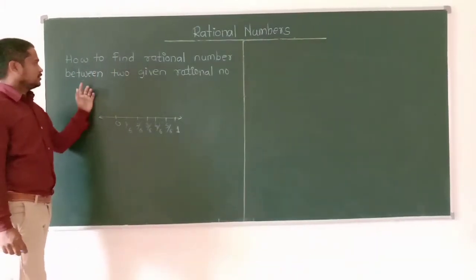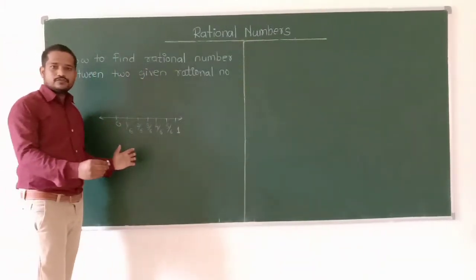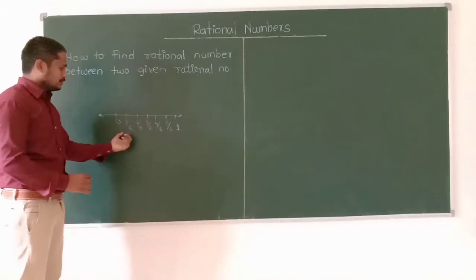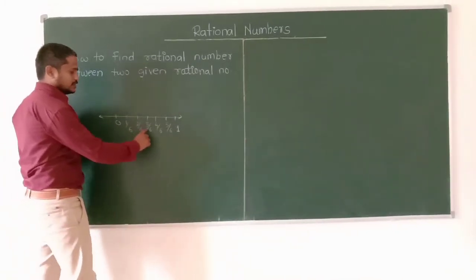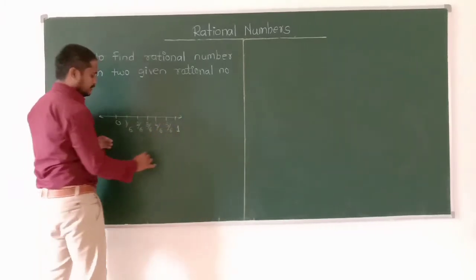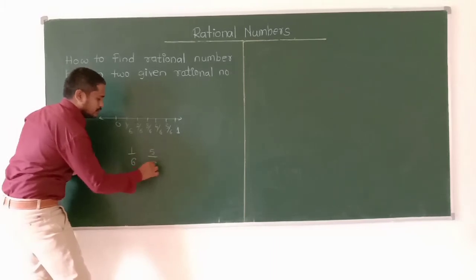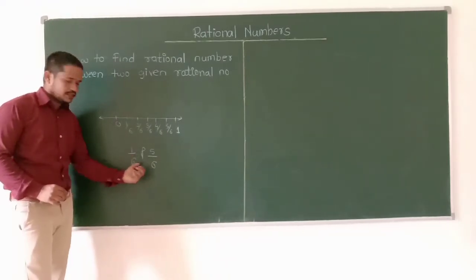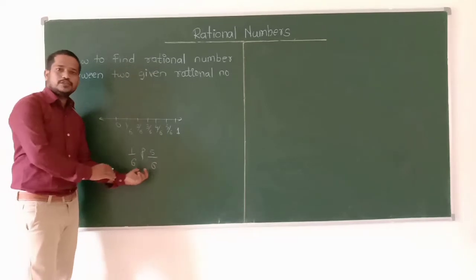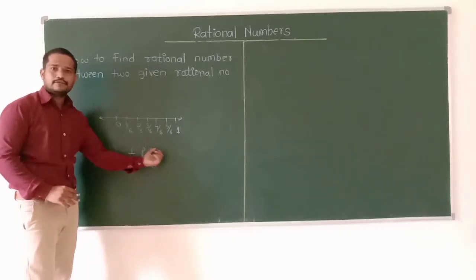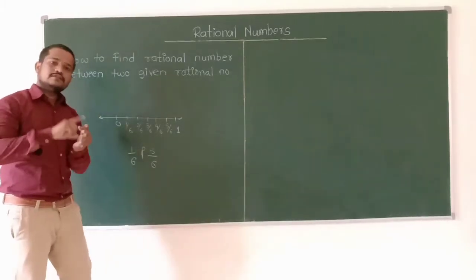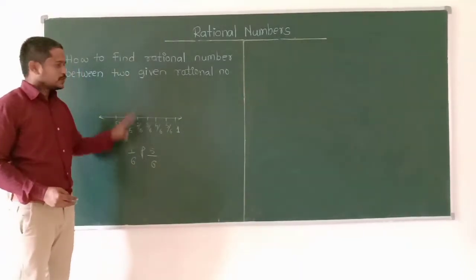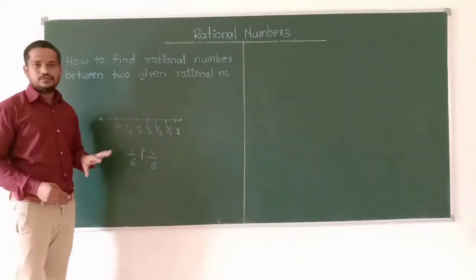Let's see how to find a rational number between two given rational numbers. We will go back to our previous topic, that was representation of rational numbers on the number line. Here we can see two numbers: 1/6, 2/6, 3/6, 5/6. I will write two numbers that is 1 upon 6 and 5 upon 6. The denominator of both fractions is the same, so we look at the numerators — 1 and 5. So there is 2/6, 3/6, and 4/6, which are the three rational numbers between 1/6 and 5/6.